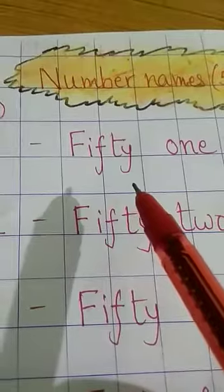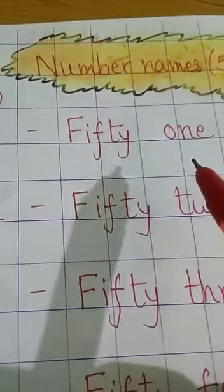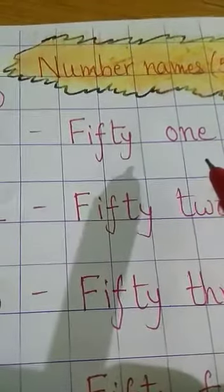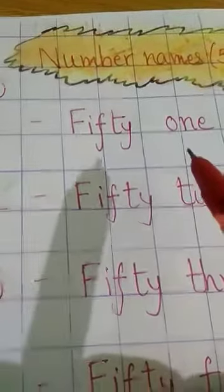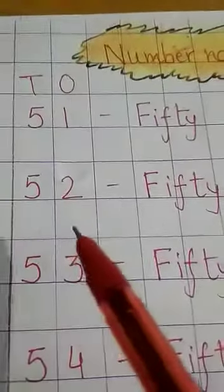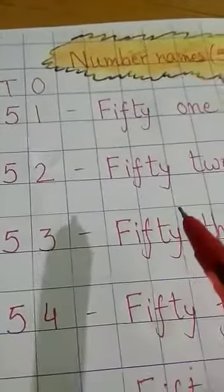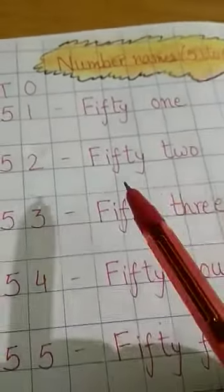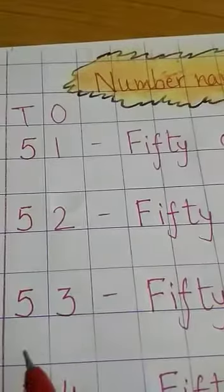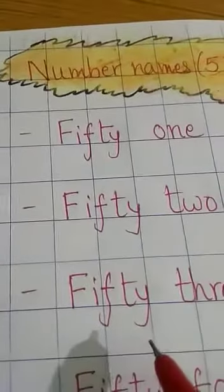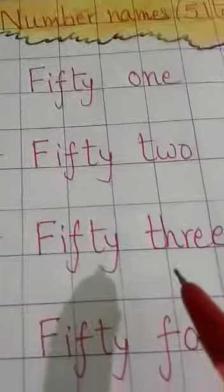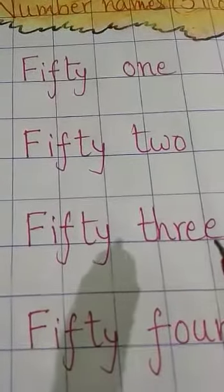5151 — FIFTY-ONE. These spellings, I am sure you know very well. 5252 — FIFTY-TWO. 5353 — FIFTY-THREE.